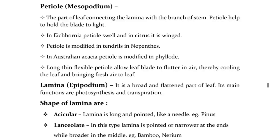The lamina (epipodium) is the broad and flattened part of the leaf. Its main functions are photosynthesis and transpiration. Shapes of lamina include: acicular — the lamina is long and pointed like a needle, e.g., Pinus; lanceolate — the lamina is pointed or narrower at the ends while broader in the middle, e.g., bamboo.